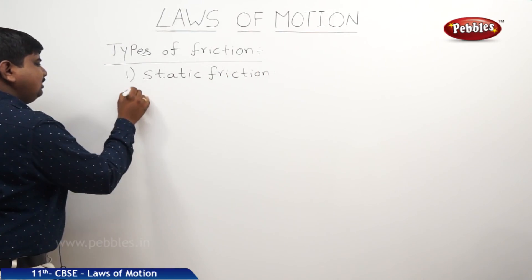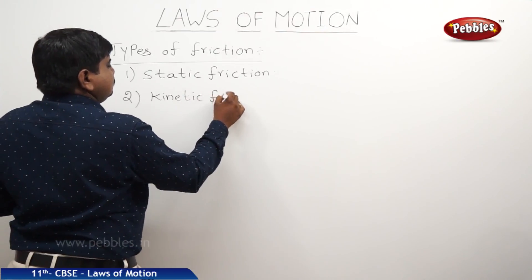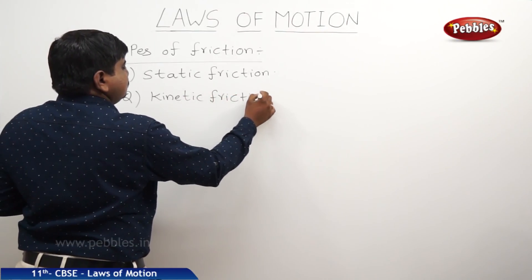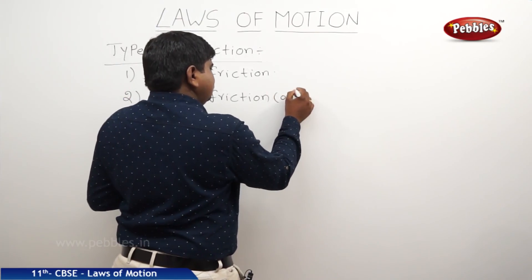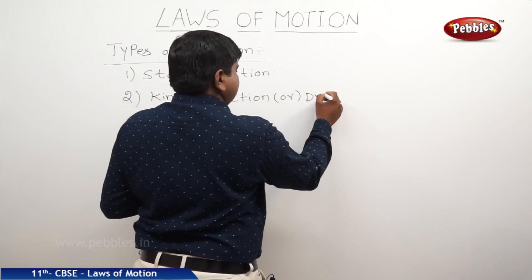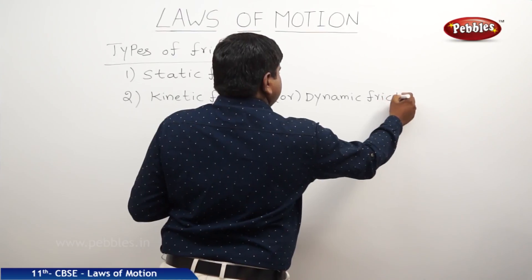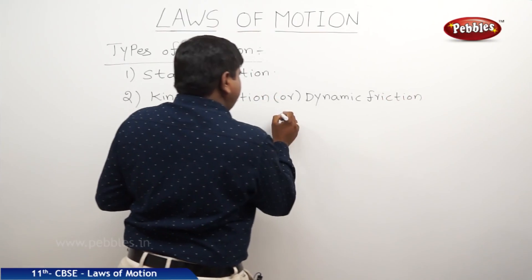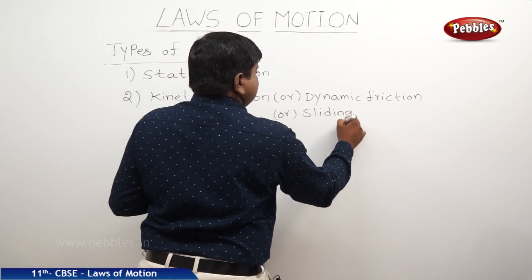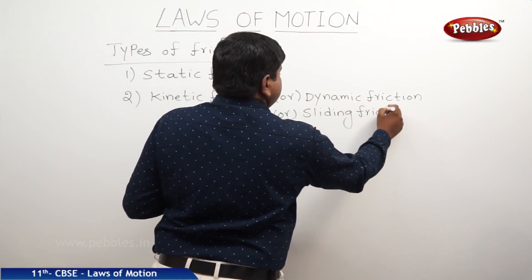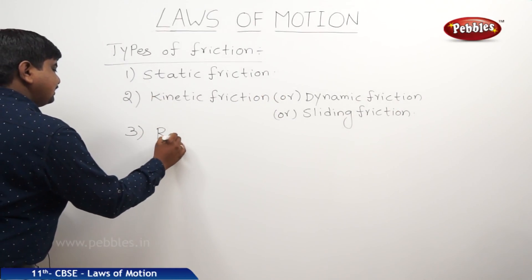Second one is kinetic friction. This kinetic friction is also called dynamic friction or sliding friction. The third one is rolling friction.